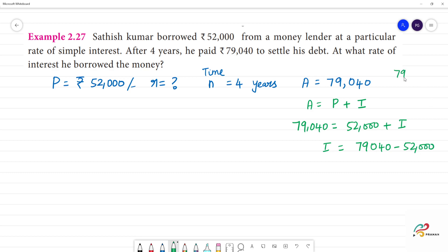So, if we subtract 79,040 minus 52,000, we get Rs. 27,040. The interest is Rs. 27,040.